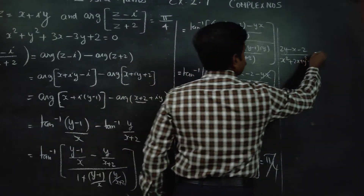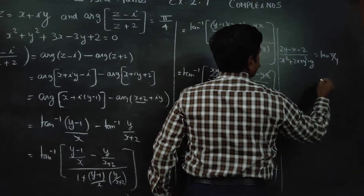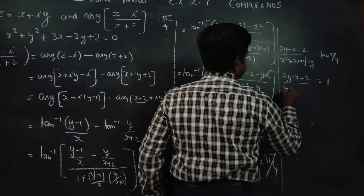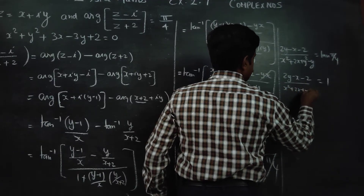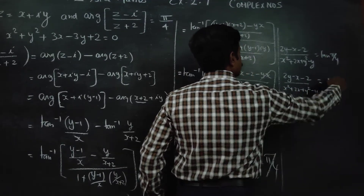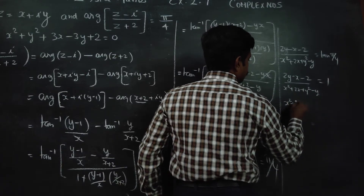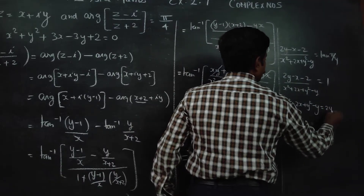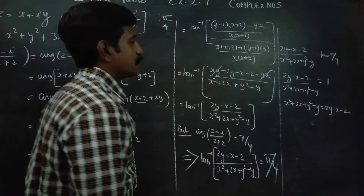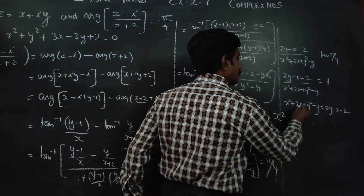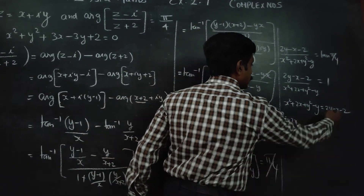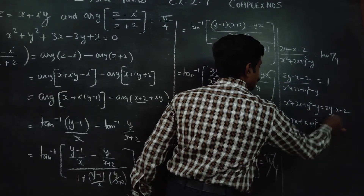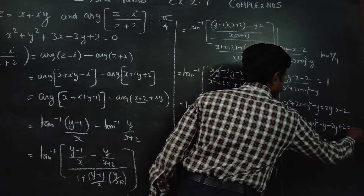Tan inverse and tan cancel. Tan 45 degrees equals 1. So we have (2y minus x minus 2) divided by (x squared plus 2x plus y squared minus y) equals 1. Cross multiply: x squared plus 2x plus y squared minus y equals 2y minus x minus 2. Bring everything to one side: x squared plus 2x plus y squared minus y minus 2y plus x plus 2 equals 0.